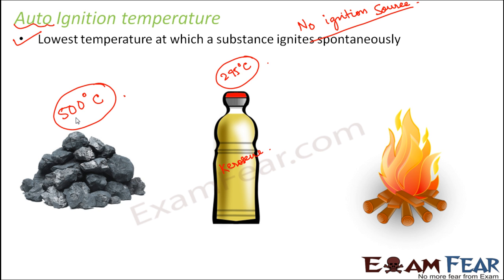Take the example of wood. In case of wood, the auto-ignition temperature is around 300 degrees Celsius. So if wood is heated to 300 degrees Celsius, it starts to release hydrocarbons which react with oxygen in the air, and that is how it catches fire.